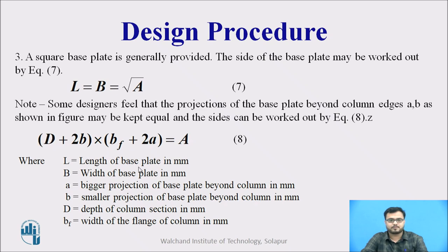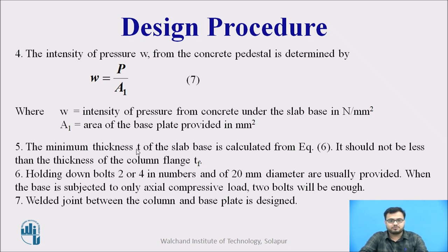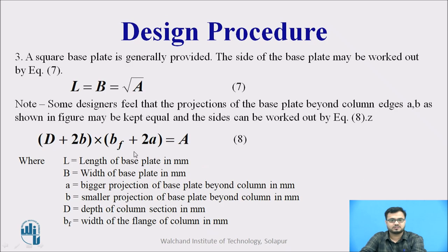The intensity of pressure W = P / A1, where A1 is the area of the base plate provided in mm². This gives the intensity of pressure from the concrete under the slab base in N/mm². We compare it with the bearing capacity of concrete — if it is less, it is acceptable. The minimum thickness T of the slab base is calculated from equation 6 and should not be less than the thickness of the column flange.